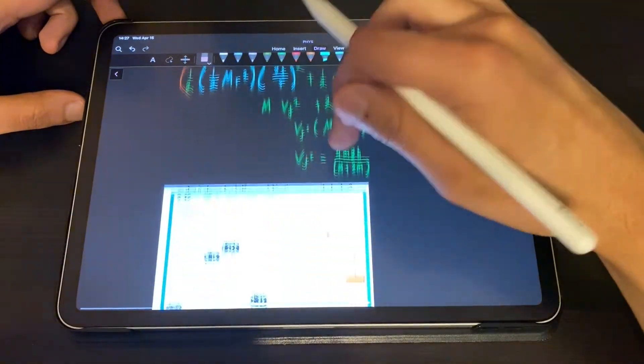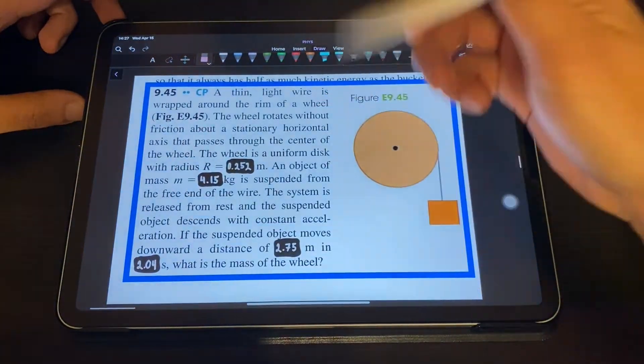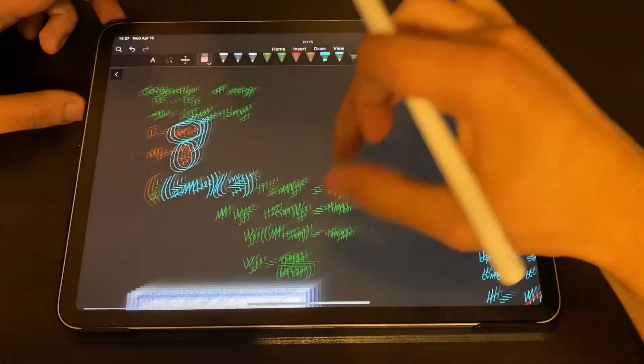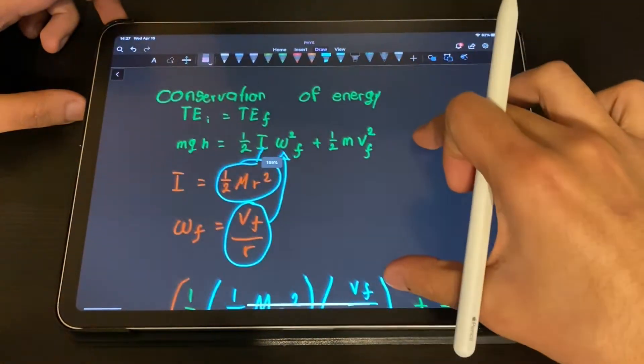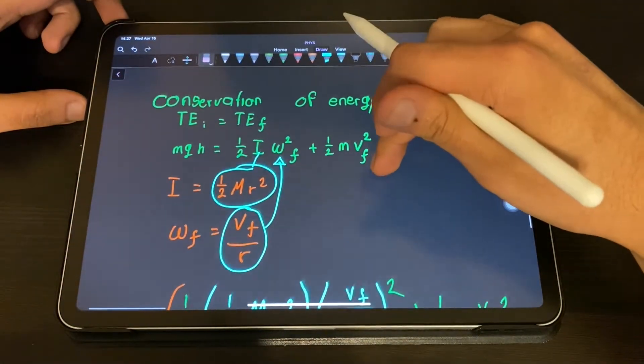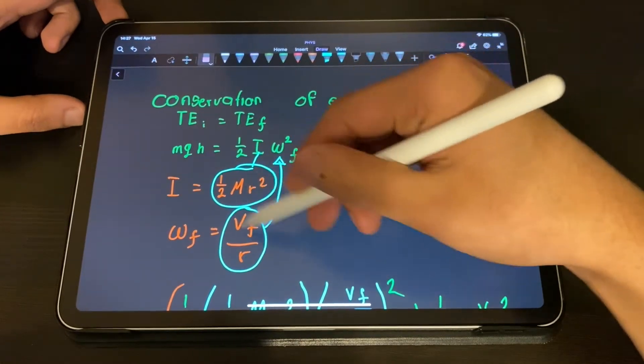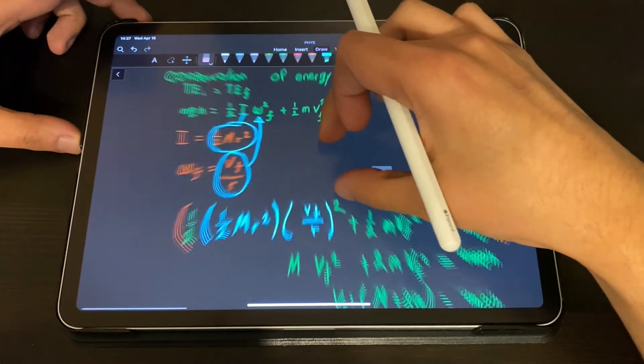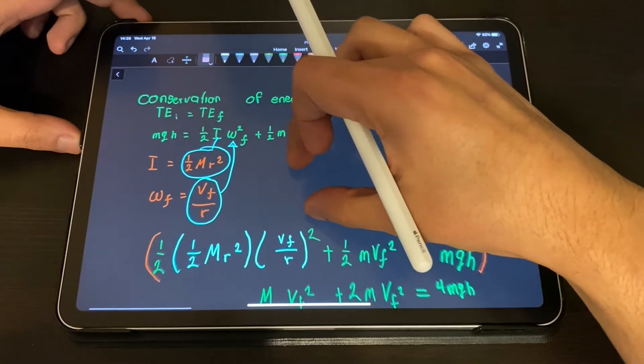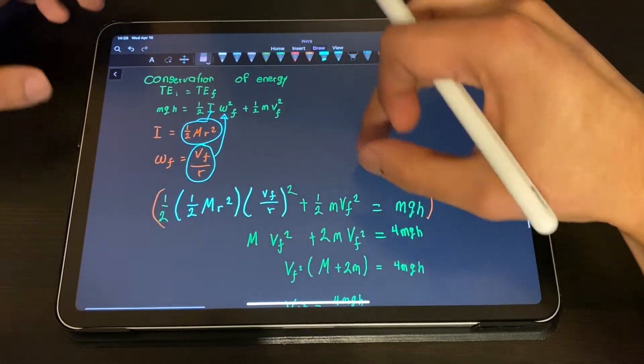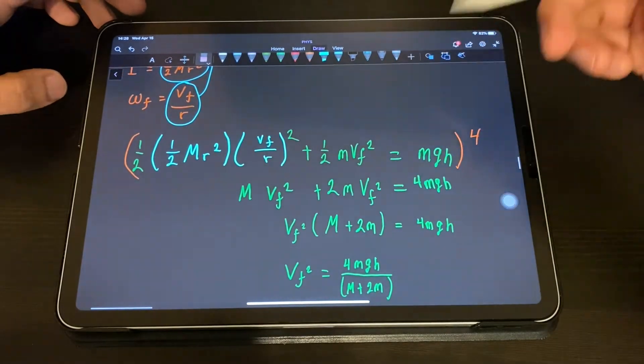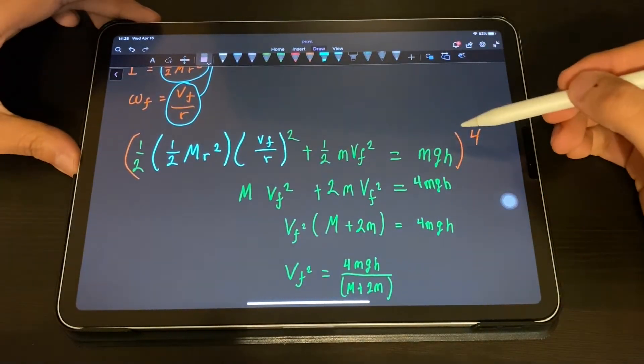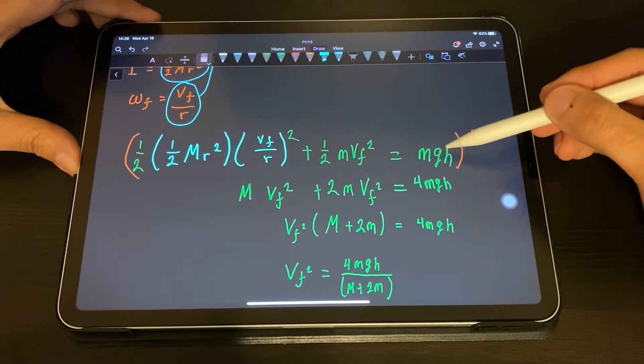This is the formula for inertia in this case because we have a uniform disk. We can substitute these two into this equation and then we get this.